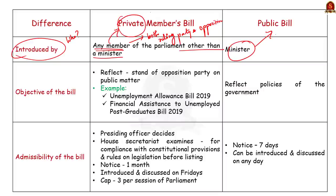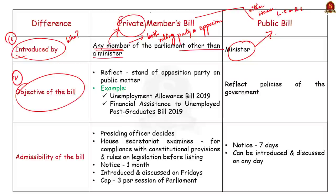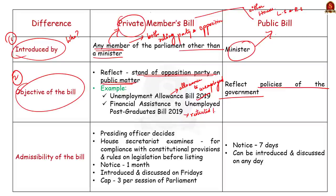The second difference lies in the objective of the bill. Usually, a public bill reflects the policies of the ruling party, while a private bill reflects the stand of the opposition party on public matters. Examples include the Unemployment Allowance Bill 2019, which sought to provide an allowance to all unemployed people, and the Financial Assistance to Unemployed Post-Graduates Bill 2019, which restricted unemployment allowances to post-graduates only. These examples reflect the opposition's stand on public matters.